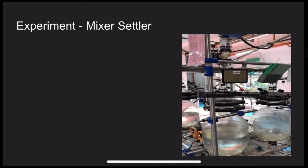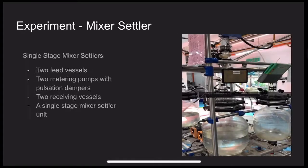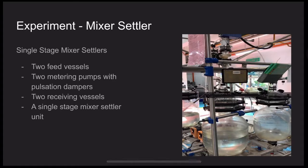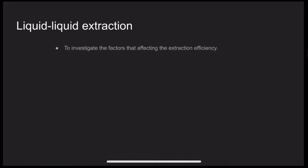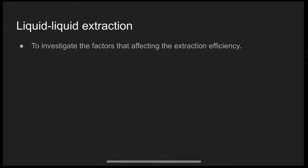In this experiment, the equipment used is a single stage mixer-settler. It is comprised of 2 feed vessels, 2 metering pumps with pulsation dampers, 2 receiving vessels, and of course a single stage mixer-settler unit. It is used to carry out a liquid-liquid extraction process to investigate the factors that affect the extraction efficiency.